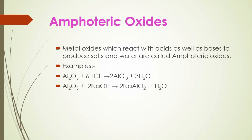Next is the amphoteric oxide. Aluminum oxide (Al₂O₃) is an amphoteric oxide. When Al₂O₃ reacts with a base like NaOH, it forms sodium aluminate. Amphoteric oxide means it behaves as both an acid and a base.